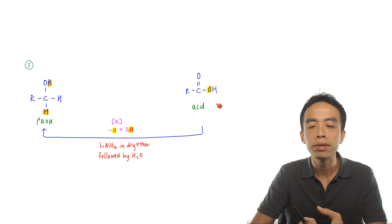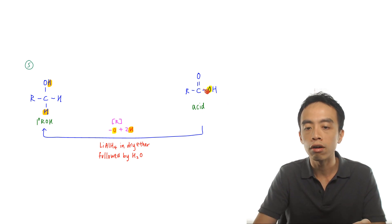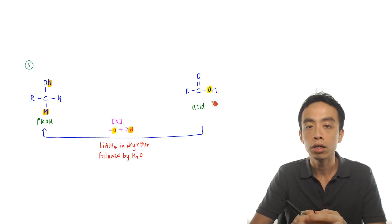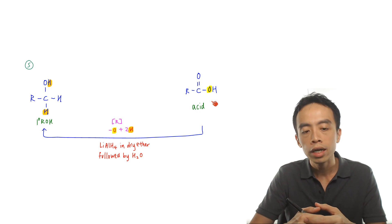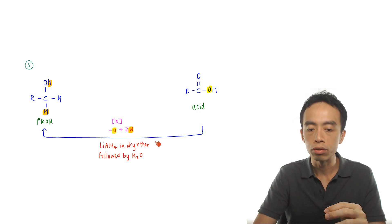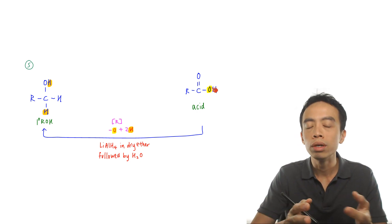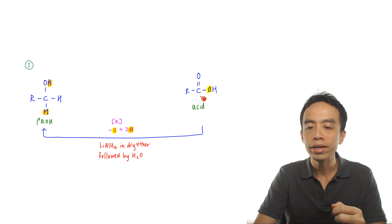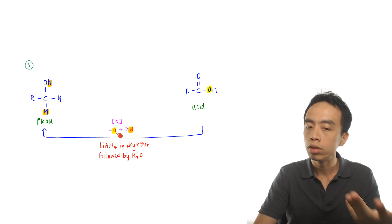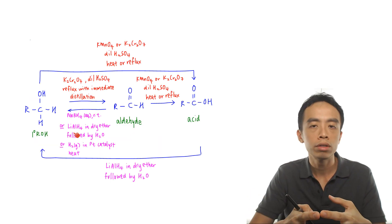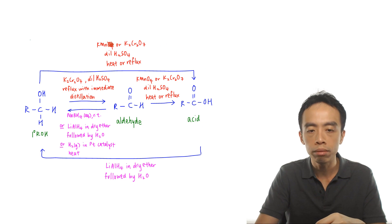Reaction 5 is the reduction of carboxylic acid to primary alcohol. Because carboxylic acid is harder to reduce, we need a stronger reducing agent — we can only use LiAlH₄ in dry ether followed by water at room temperature. We remove an oxygen and add hydrogens to both carbon and oxygen. Losing oxygen and gaining hydrogen confirms this is a reduction reaction.